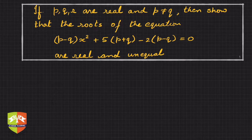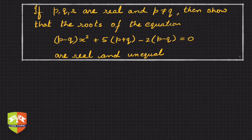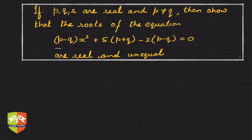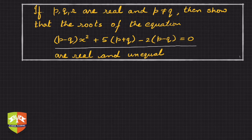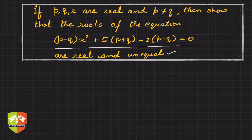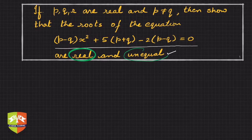Hi friends, we are back with another question. In this question it is said that if p, q, r are real and p is not equal to q, then show that the roots of the equation (p-q)x² + 5(p+q)x - 2(p-q) = 0 are real and unequal. So the keywords here are 'real' and 'unequal'.